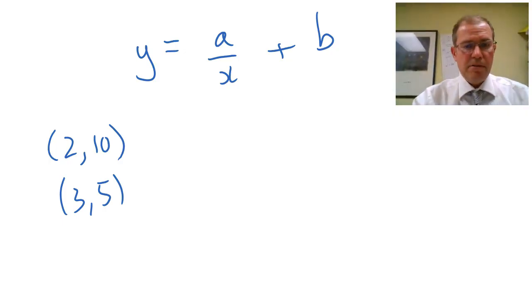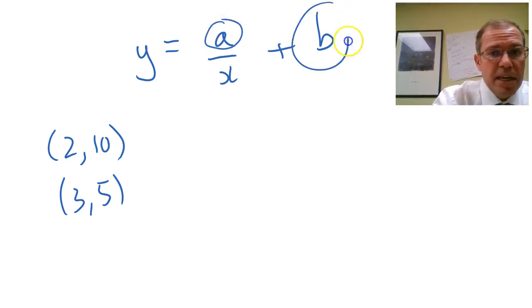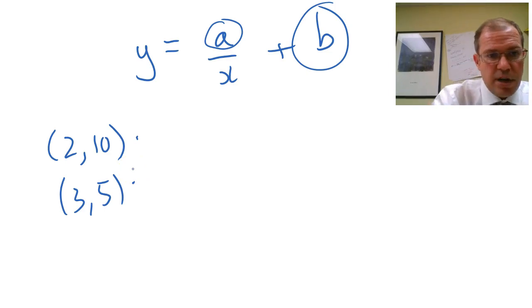So here we are, we've got y equals a over x plus b, and I know it goes through 2, 10 and 3, 5. So because I've got two unknowns, a and b, and I've got two points, I should be able to set up a pair of simultaneous equations and solve them to work out what a and b are, and then I'll get my function. So let's try that.